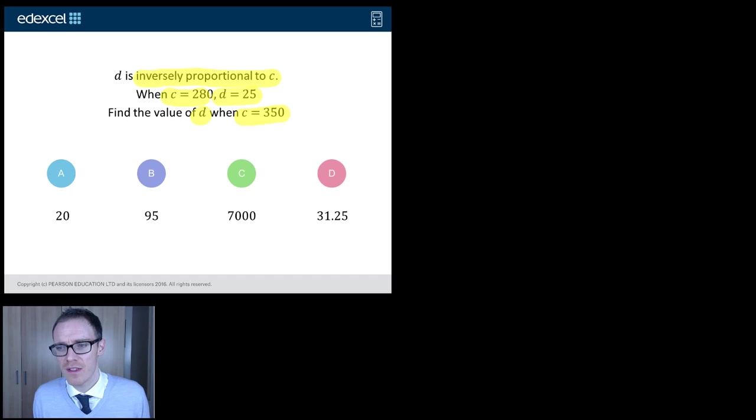I'll be honest with you, this is a standard question. Now by standard, I don't mean easy, but there's no twist in there. It's one of those, do you know the process for doing this? Because if you do, you're going to get it right. If you don't, you're going to get it wrong. So let's go through this nice and slowly. D is inversely proportional to C.